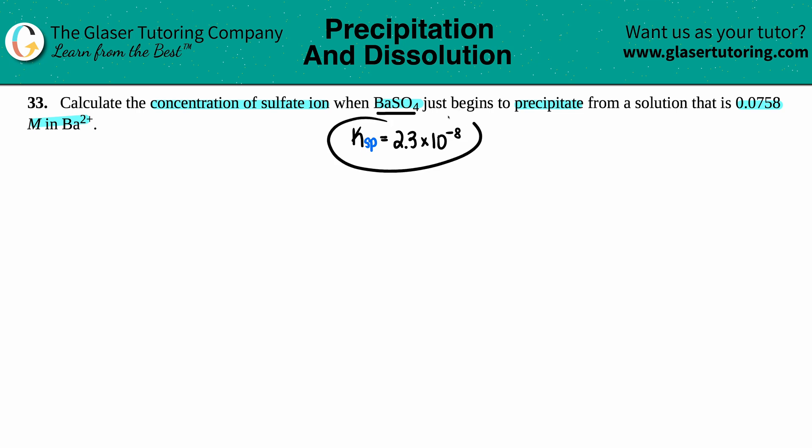If we're able to use the Ksp value, that means we're in a saturated solution. A saturated solution means you're just at the beginning of precipitation, just at the cusp of forming a solid. If you're having a lot of precipitation, you're way oversaturated. But since they told us we're beginning to precipitate, we'll treat this as a saturated solution so we can use the Ksp.